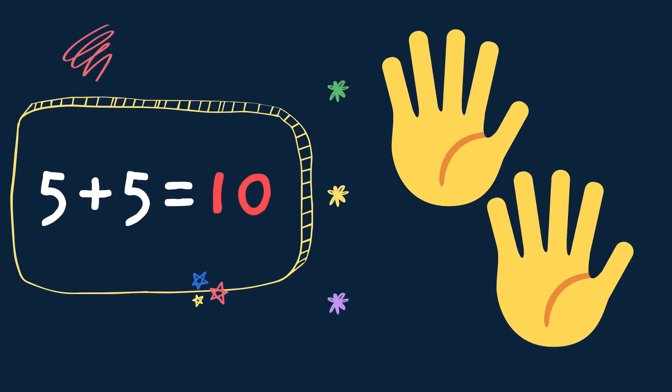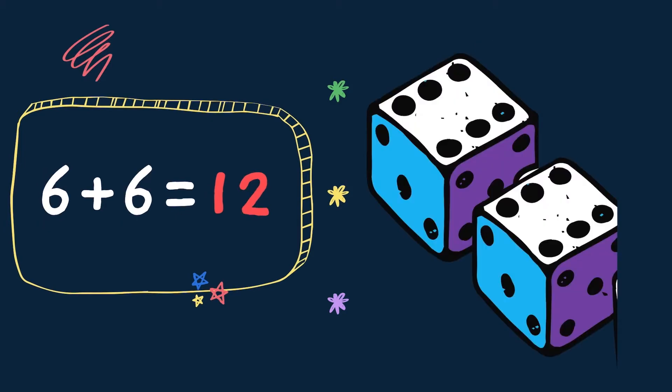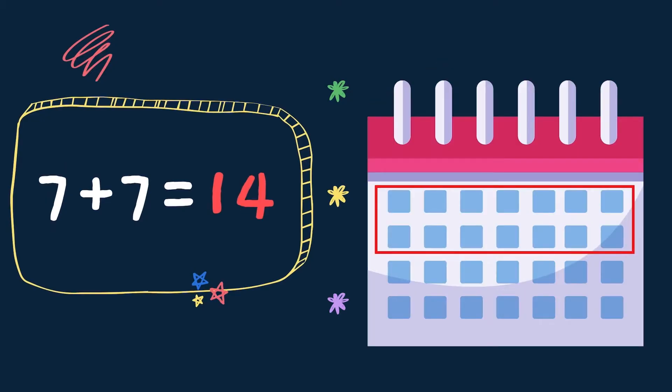5 plus 5 equals 10. 5 fingers on each hand. 6 plus 6 equals 12. 7 plus 7 equals 14. 7 days in 1 week and 14 days in 2 weeks.